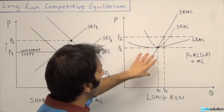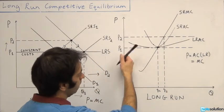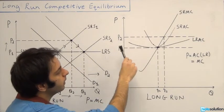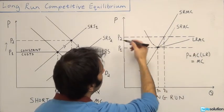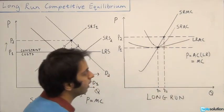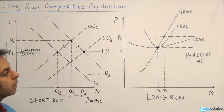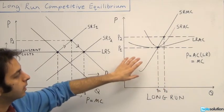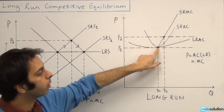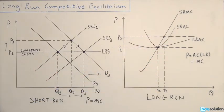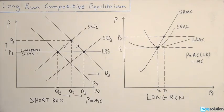Looking at the representative firm in the long run: initially the firm was at P1, then the demand spike pushed the price up to P2, and the short-run equilibrium for the firm was at the intersection of P2 and the short-run marginal cost curve, giving output Q2. But in the long run, the firm returns to the point of minimum efficiency — where marginal cost and long-run average cost intersect — which is once again the long-run equilibrium point.